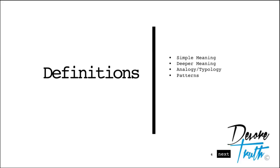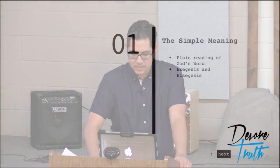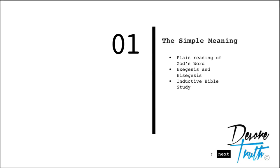So what I mean by simple meaning - this is the plain reading of God's Word. We remember the terms exegesis and eisegesis. We read the text for what it says; we don't read our own ideas into it. We draw the meaning of Scripture from the text itself. Eisegesis is the opposite - you're reading your own ideas into it. We talked about inductive Bible study and historical-grammatical method. So just the simple meaning - we always start with that.